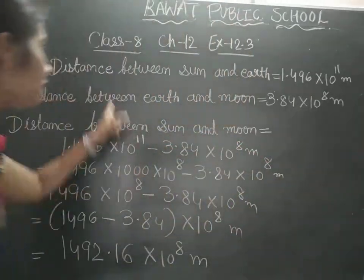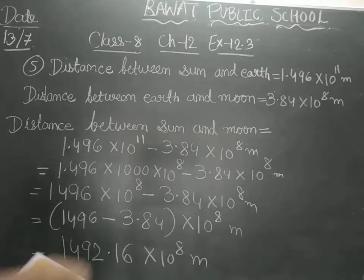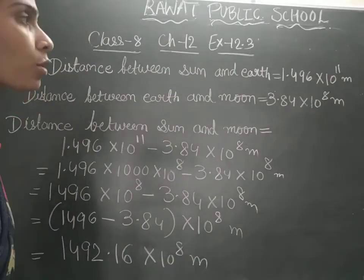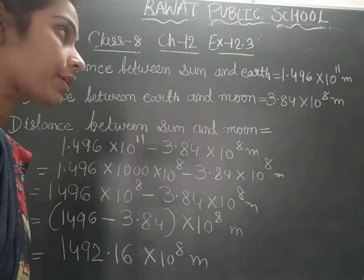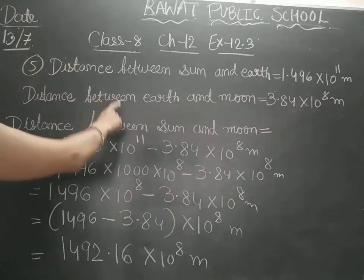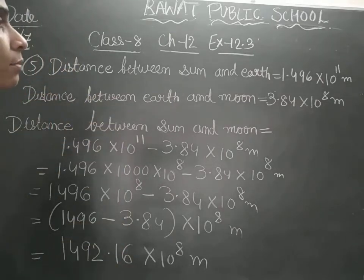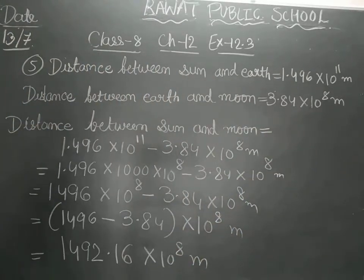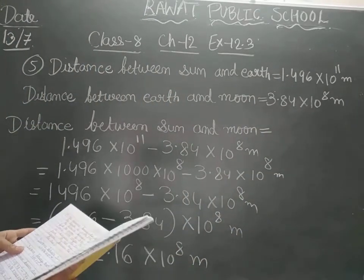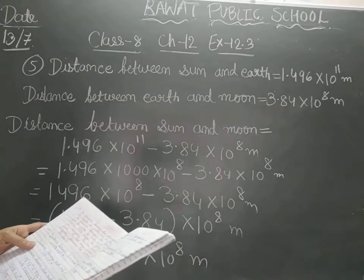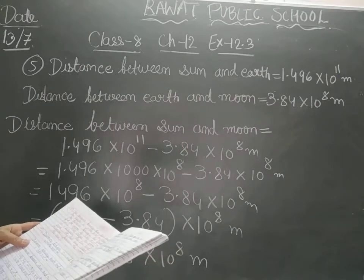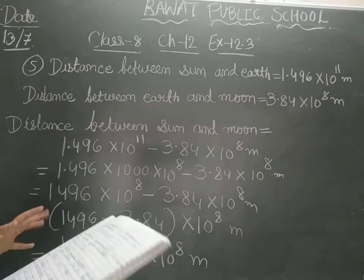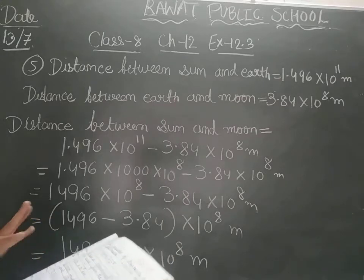So here we are given the distance between sun and earth, and that is 1.496 into 10 raised to 11 meters. Then the distance between earth and the moon is 3.84 into 10 raised to 8 meters. And it is told that during solar eclipse, the moon comes in between the sun and earth. At that time, what is the distance between moon and the sun?